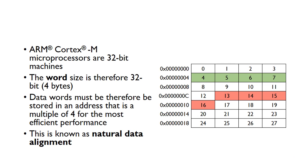ARM Cortex-M microprocessors are 32-bit machines, so by that we mean that the word size is 32-bit or 4 bytes. This is the natural size of data that it can store. When you talk about numbers, it's natively going to use 32 bits to represent a number.